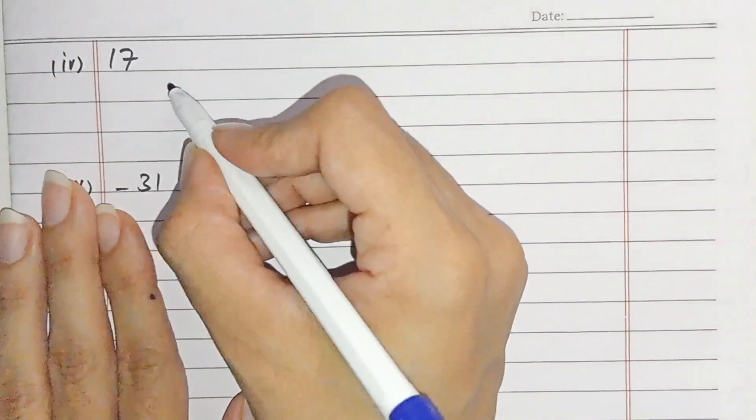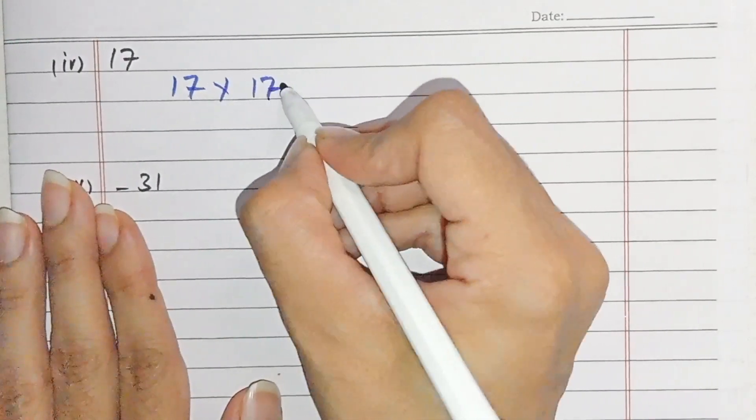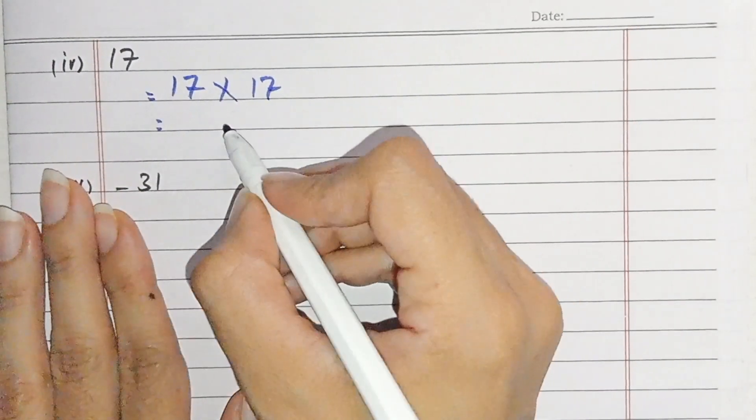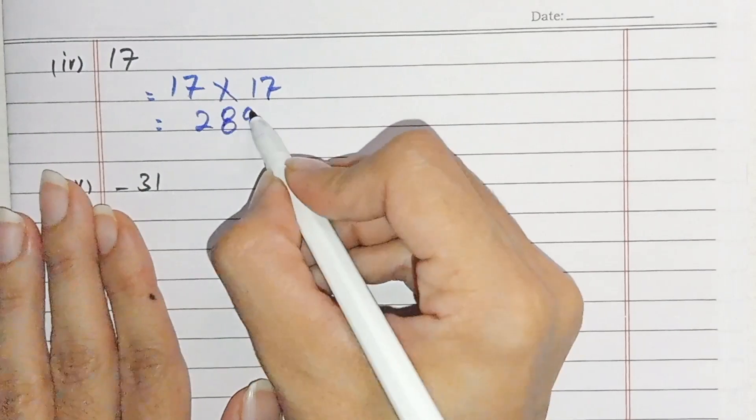Now it's part number 4, 17 multiply by 17. 17 multiply by 17, we get 289.